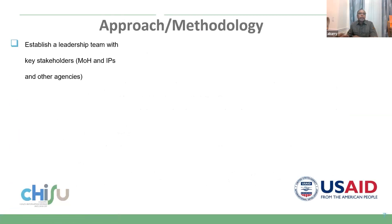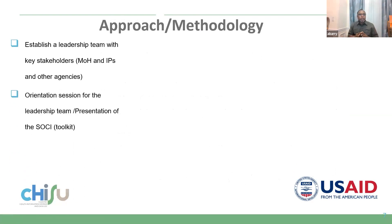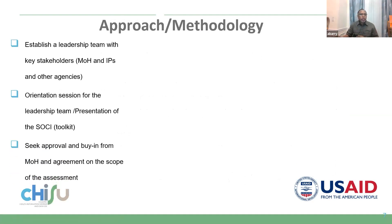In terms of methodology, the first step is establishing a leadership team with key stakeholders — people from the ministry, implementing partners, or other agencies at the country level. People need to be oriented to have a common understanding of the tool. We need to seek approval and buy-in from the ministry and agree on which component of the HIS is being assessed — it could be the overall HIS, the routine health information system, or a subsystem of a health program.